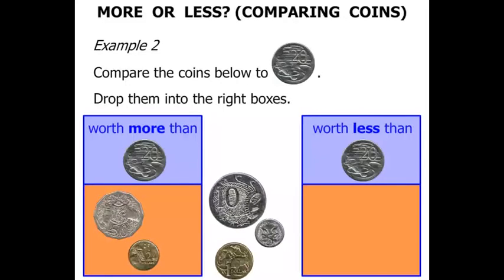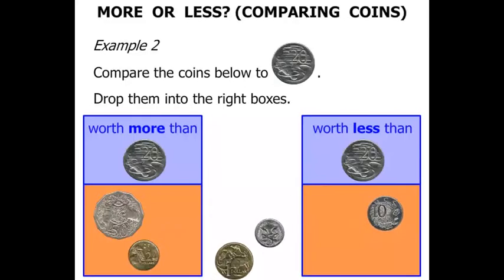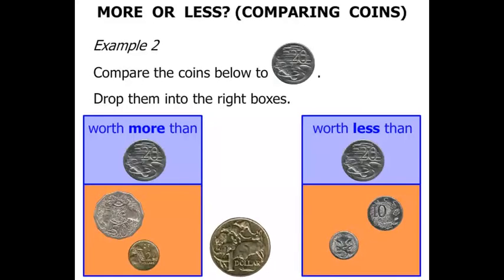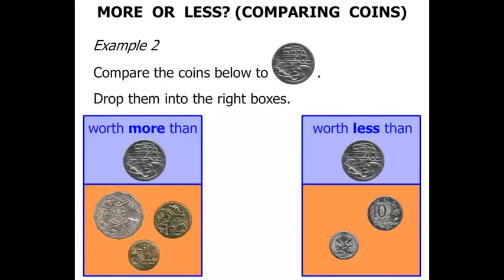What about this 10 cent coin compared to 20 cents? It's worth less than 20 cents, let's move that across. The 5 cent coin is worth least of all. It's certainly worth less than 20 cents, let's move that there. And we've got the $1 coin, another gold coin. Well that's worth more than 20 cents, so let's move it to the correct box there.